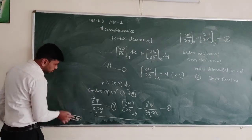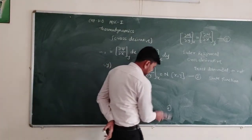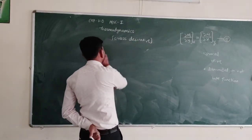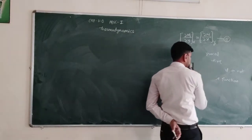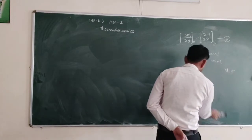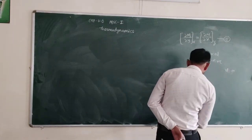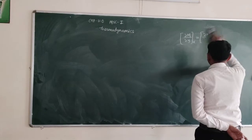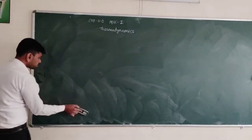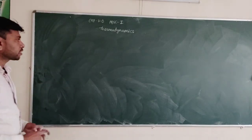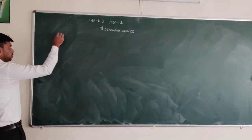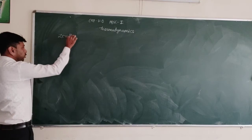This is about Euler theorem. Next we have to start the laws of thermodynamics. We know there are different laws of thermodynamics such as the first law, second law, and third law of thermodynamics. But before starting those, we have to study another law — the zeroth law of thermodynamics.